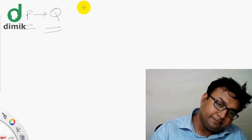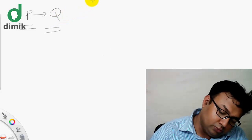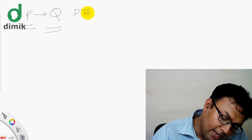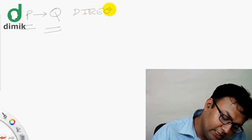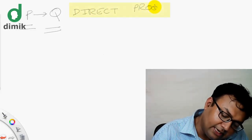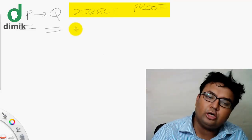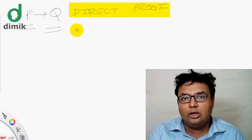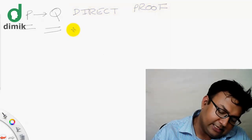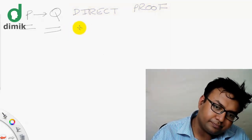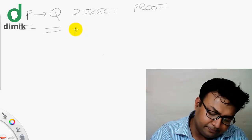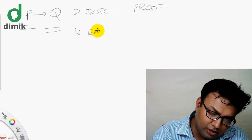In this technique, the premise is true and the outcome of the conclusion is true. This technique is called direct proof. So, P is true and Q is true. Let's see how we do this. We will say that n is even, and the premise is even.